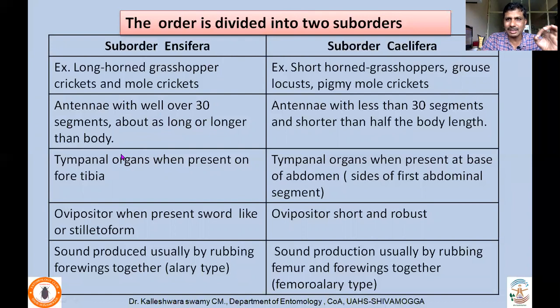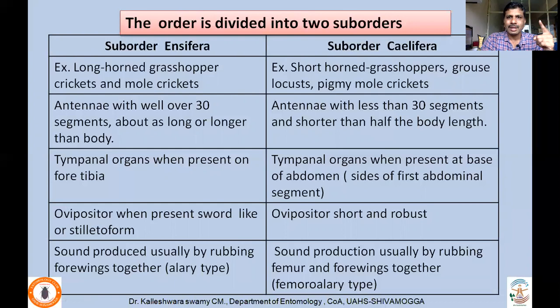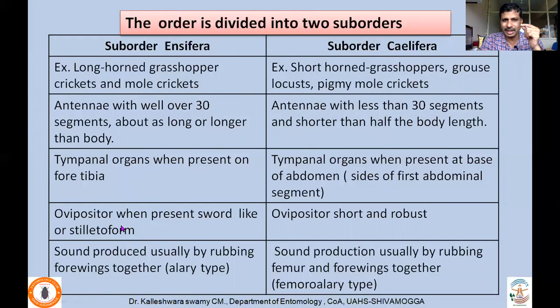Ensifera: antenna with well over 30 segments, about as long as or longer than the body. Caelifera: antenna with less than 30 segments, shorter than half the length of the body. The number of segments is actually the most important distinguishing feature. Tympanal organs, when present, are on the foretibia in Ensifera, whereas in Caelifera they are on the abdomen — specifically on the sides of the first abdominal segment. Ovipositor in Ensifera is sword-like or stiletto-shaped — sharp, elongated. In Caelifera, the ovipositor is short and robust. Sound production in Ensifera is by rubbing forewings together — alary type — whereas in Caelifera it is femoro-alary type.